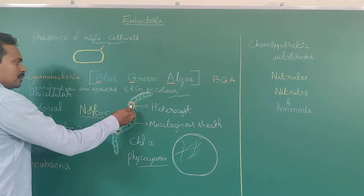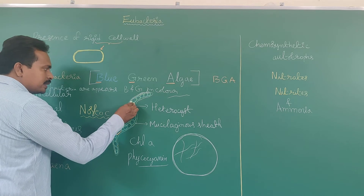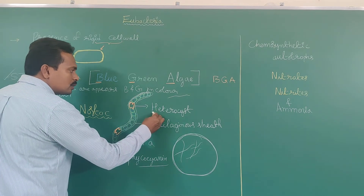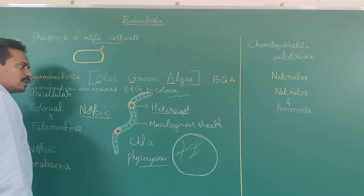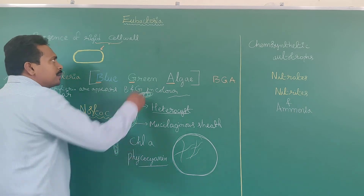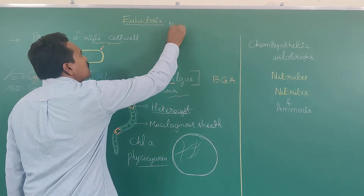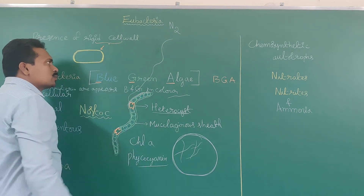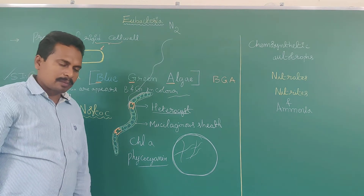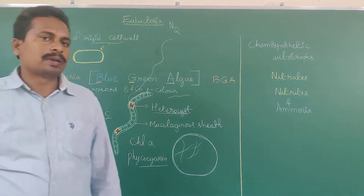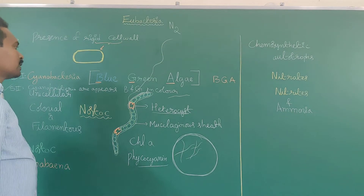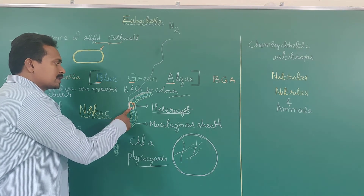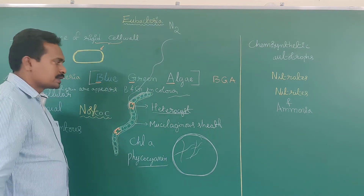This blue-green algae consists of specialized large-sized cells known as heterocysts. The function of heterocysts: these cells are involved in nitrogen fixation. That is important from an exam point of view — they may ask which cells are involved in nitrogen fixation in blue-green algae. The answer is heterocysts.